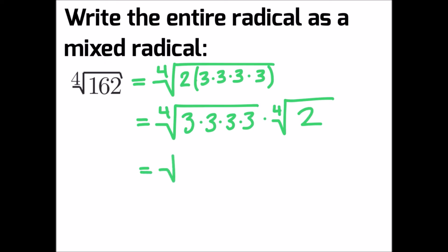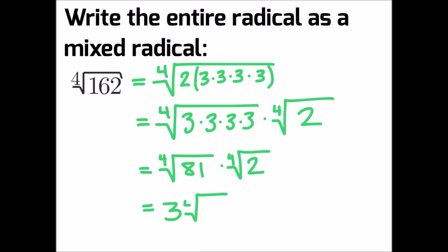Simplifying that, we can say that would be the fourth root of 81 multiplied by the fourth root of 2. And we can get an actual number value: the fourth root of 81 equals 3, multiplied by the fourth root of 2.